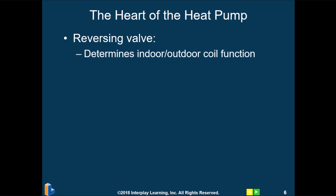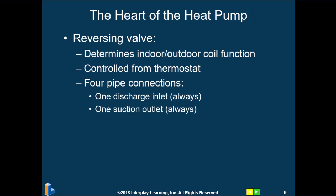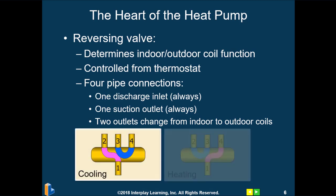The heart of the heat pump is the reversing valve — this determines whether the discharge gas gets sent to the indoor or outdoor coil. The thermostat also has an impact; there is an O terminal or sometimes a B terminal that controls the position of the reversing valve. The reversing valve has four connections. The lone port on top is the discharge line — the permanent discharge port, always receiving discharge gas from the compressor. The center port of the three at the bottom is the permanent suction port, always receiving suction vapor from the compressor. The two outside ports change functions and route gas to either the indoor or outdoor coil, depending on whether we're calling for heating or cooling.